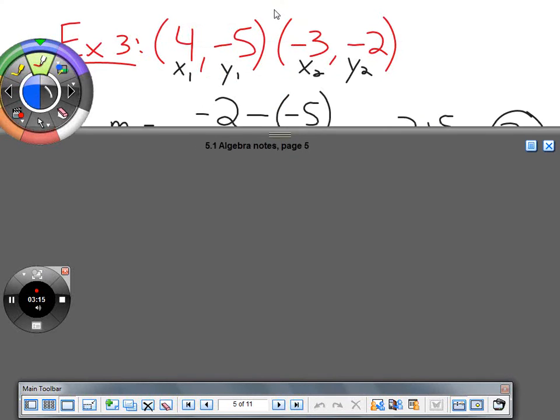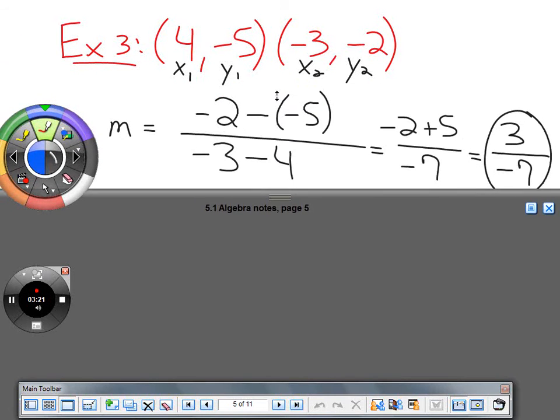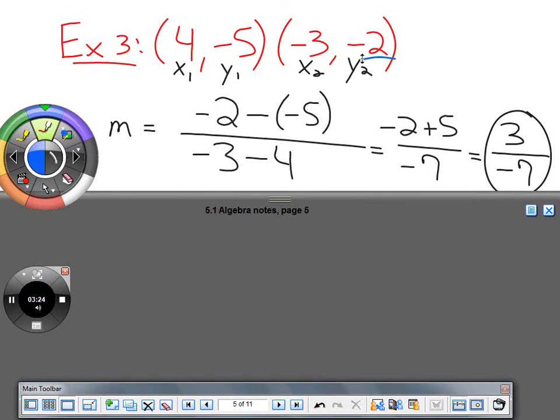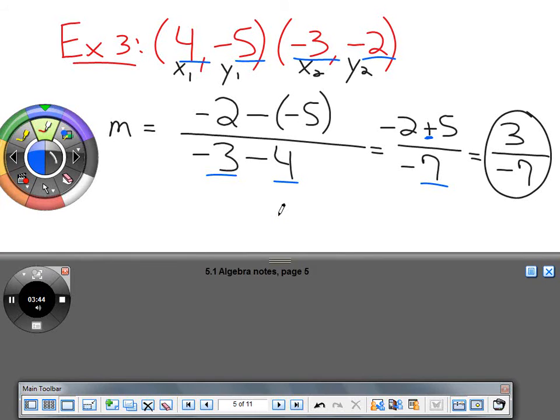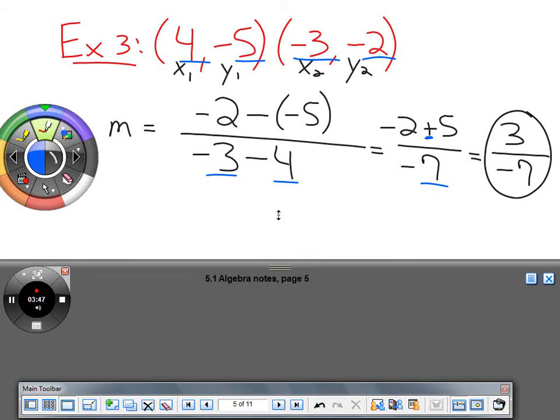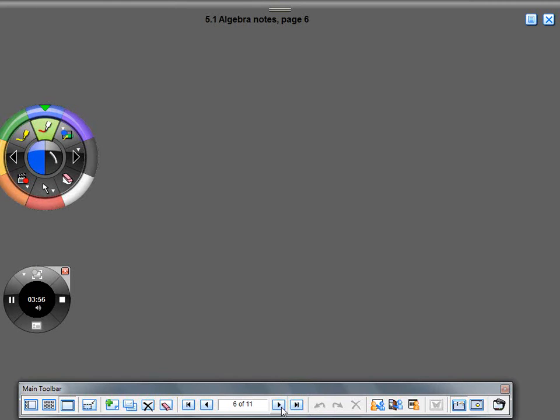Next one has a lot of negatives. Subtract the Y's on top: negative 2 minus negative 5, which is negative 2 plus 5, equals 3. On the bottom, negative 3 minus 4 equals negative 7. The slope is 3 over negative 7, or negative 3/7. You can write it as negative 3 on top and 7 on the bottom - they're all the same as long as you have one negative sign.